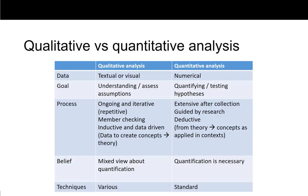Just to do an overview of the differences between qualitative versus quantitative analysis. The type of data is quite different: textual or visual in qualitative and numerical in quantitative. I know that seems somewhat of a given; however, you can treat textual data in numerical ways, and in looking at the content analysis approach I'll show you how you do that.